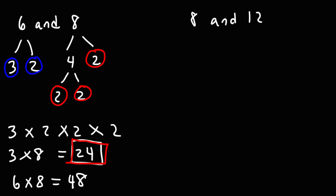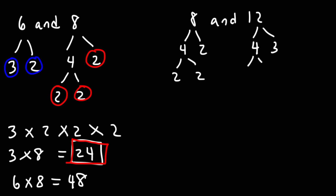Now let's find the least common multiple of 8 and 12 using prime factorization. So 8 is 4 times 2, and 4 is 2 times 2. And 12 is 4 times 3, and 4 is 2 times 2. So the prime factors of 8 are 2 times 2 times 2, and the prime factors of 12 are 2 times 2 times 3.